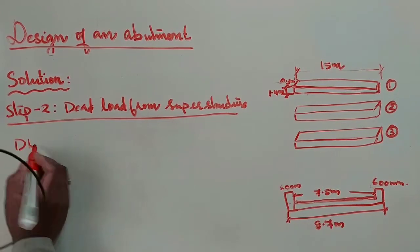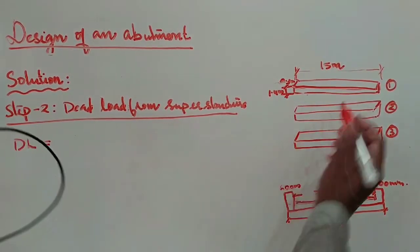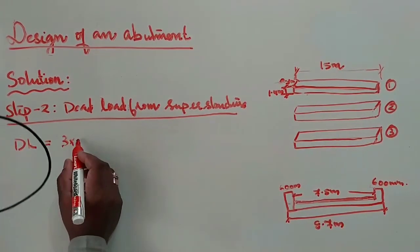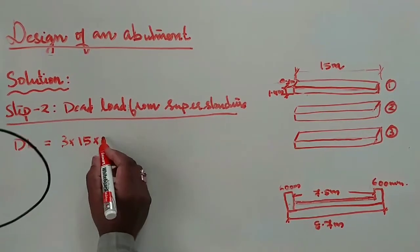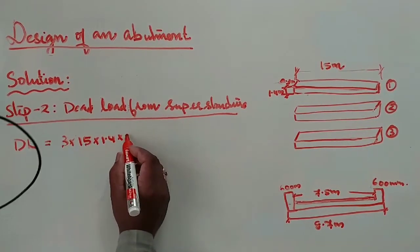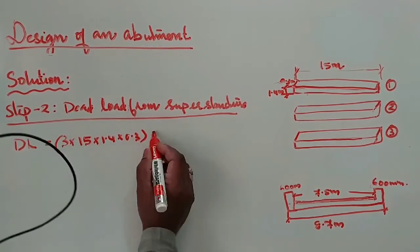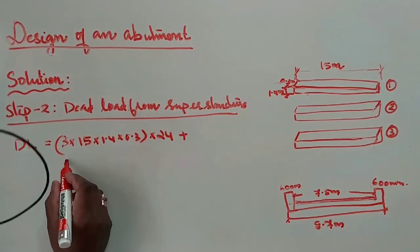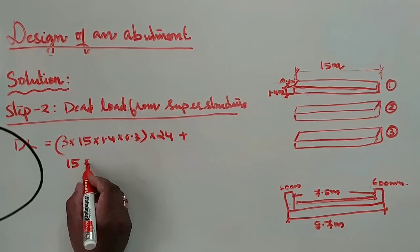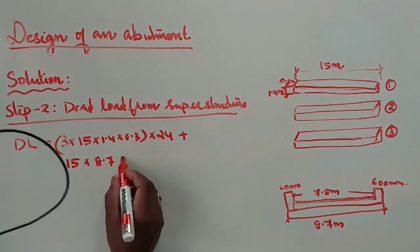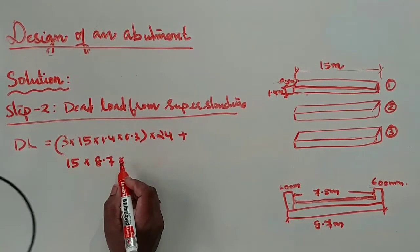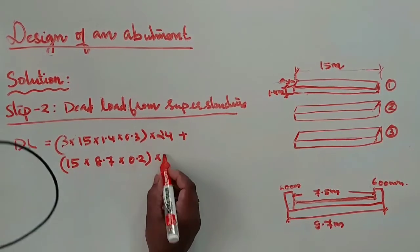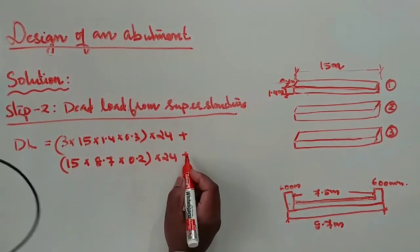Dead load calculation: Dead load equals the weight of three girders — 3 × length 15 m × depth 1.4 m × breadth 0.3 m × unit weight 24 kN/m³ — plus the weight of the deck slab: length 15 m × breadth 8.7 m × depth 0.2 m (200 mm as given) × unit weight 24 kN/m³.